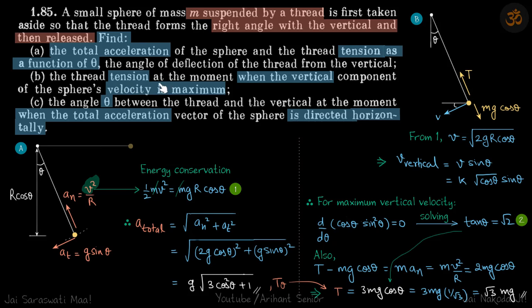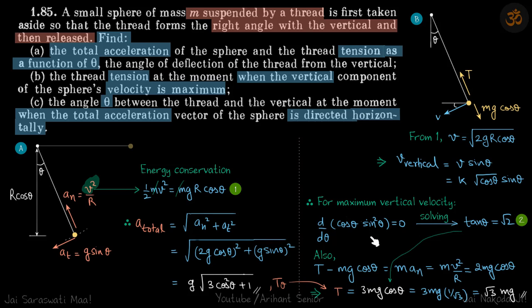For the second part — tension when the vertical component of velocity is maximum. We have velocity as a function of theta: v = √(2gr·cosθ). The vertical component is v·sinθ, which is proportional to √(cosθ)·sinθ. To maximize this, we differentiate cos(θ)·sin²(θ) and set it to zero, which gives tanθ = √2.